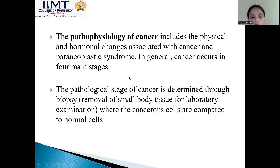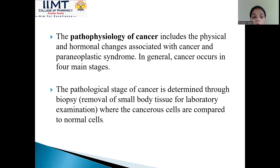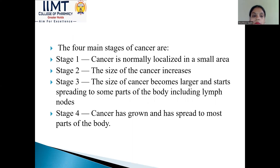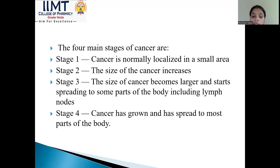Cancer occurs in four main stages. The pathological stage is determined through biopsy, where a small body tissue is removed for laboratory examination and compared to normal cells. In stage one, cancer is normally localized in a small area. In stage two, the size of cancer increases. In stage three, cancer becomes much larger and starts spreading to other parts including lymph nodes. In stage four, cancer has grown and spread to most other parts of the body.